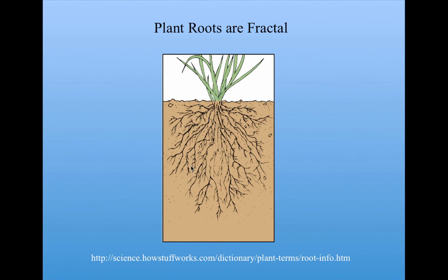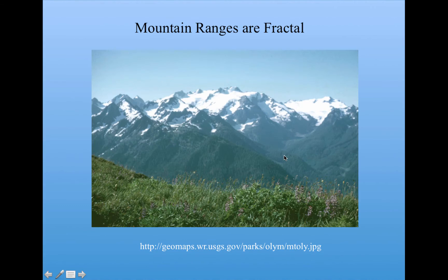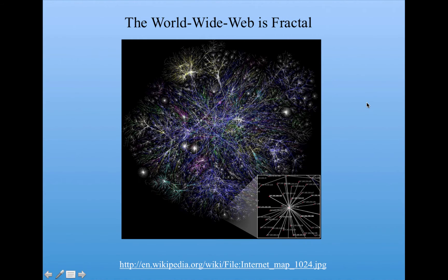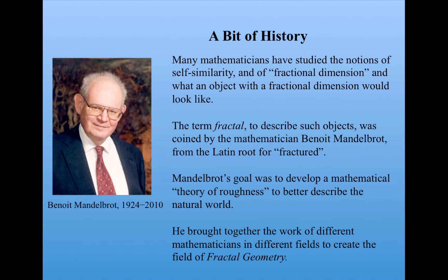Plant roots have tree-like fractal properties. Mountain ranges are fractal — if I look at any one of these mountains, it also has peaks and valleys the same way that the whole mountain range does. Surprisingly, the World Wide Web is a fractal. This is a map of part of the World Wide Web — the connections between web pages. You can see that if you blow up a tiny part of it, it has the same kind of spike coming out of a central hub that the whole web picture does. We'll see later, when we talk about networks, the significance of the fractal properties of networks like the World Wide Web.